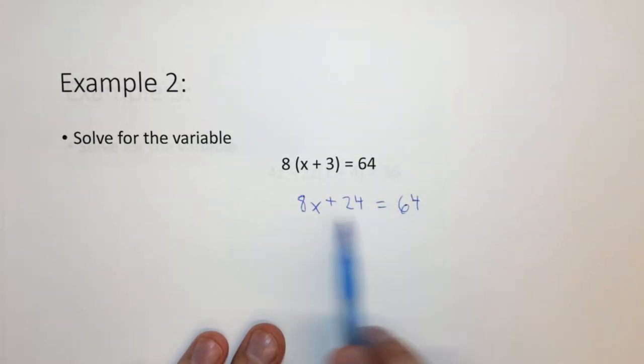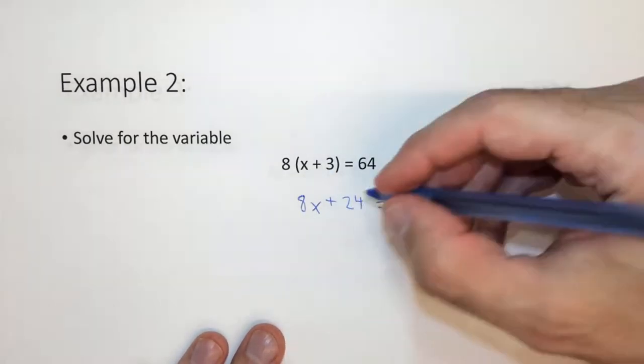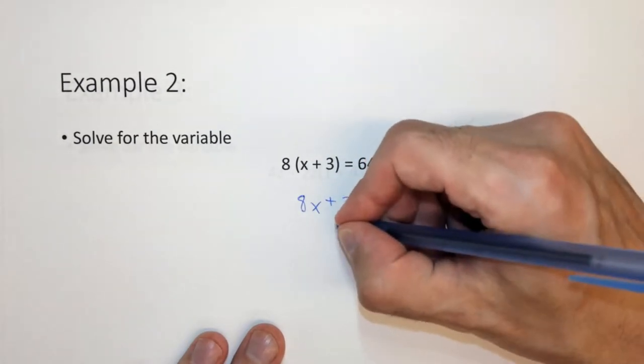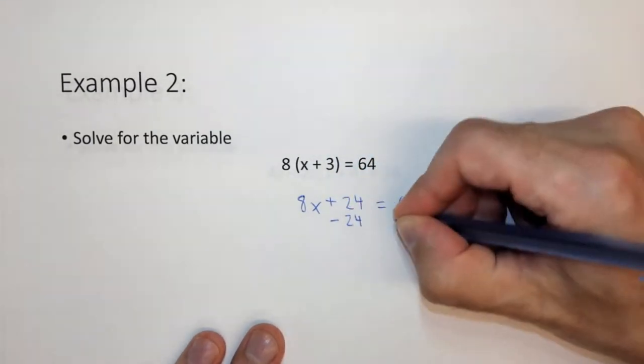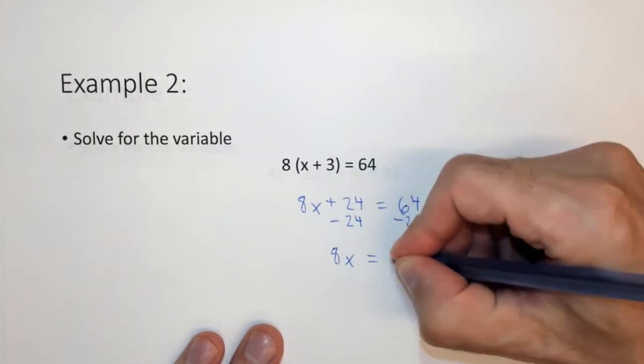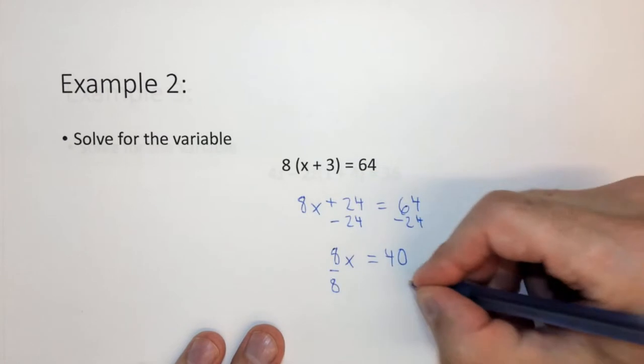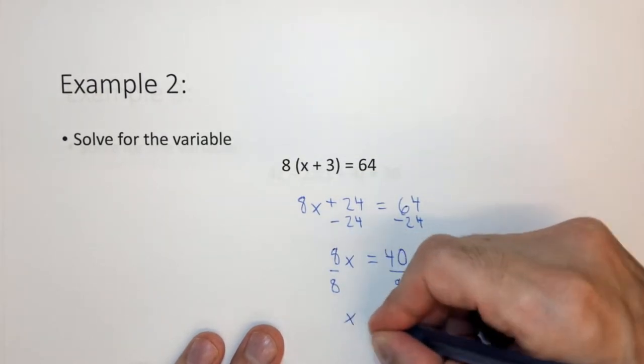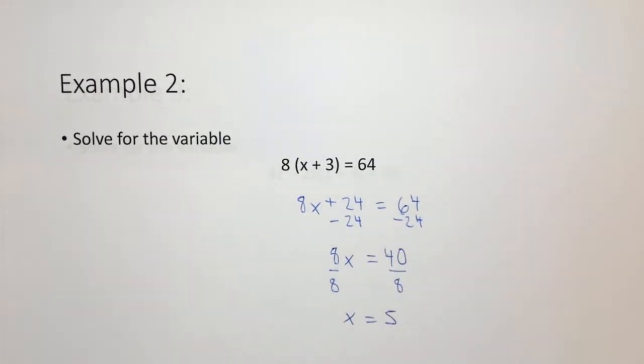Now we notice we have numbers on both sides and a number with a variable. Let's combine the number terms without the variable. Minus 24, minus 24. And what we find is 8x equals 40. Divide both sides by 8, x equals 5. So in this way we can simplify for x.